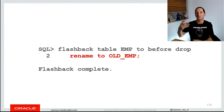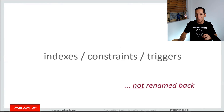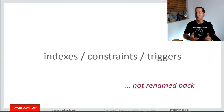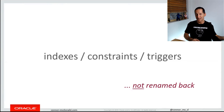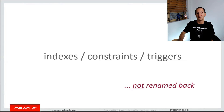One thing to note is that when you do that, the subordinate objects are not renamed back — that becomes your responsibility. If you accidentally drop the table and flashback before drop, you would then rename these individual subordinate objects back to their original names.